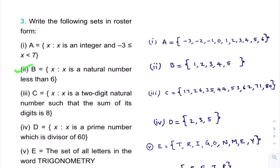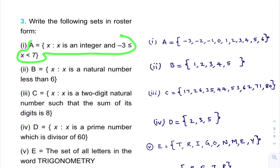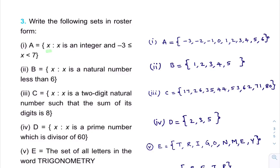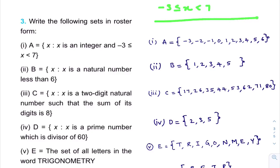All the sets in these questions are in Set Builder Method. We need to convert them into Roster Method. Here, x is the element of the set — x is an integer and it lies between minus 3 and 7. Since minus 3 less than or equal to x less than 7, minus 3 is included and 7 is not included. So I'll find all integers between minus 3 and 7.